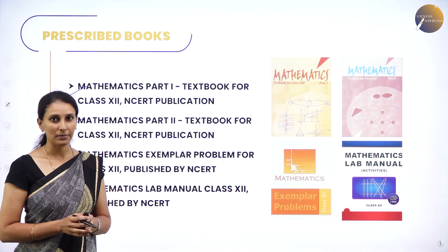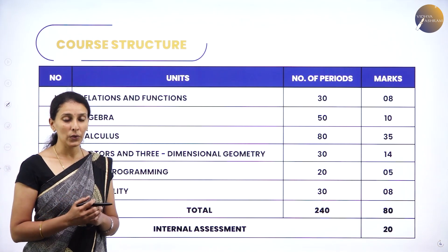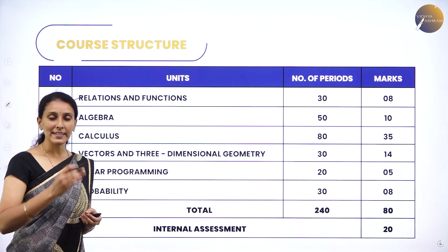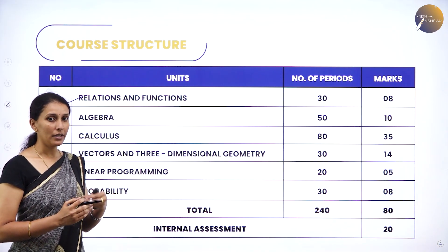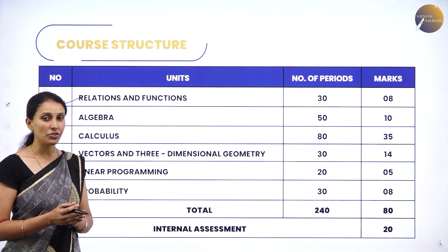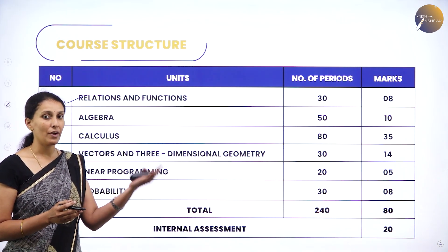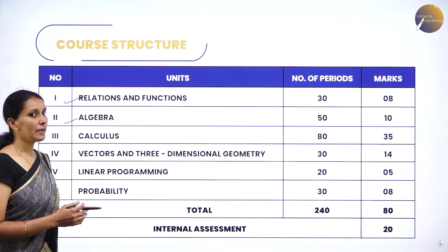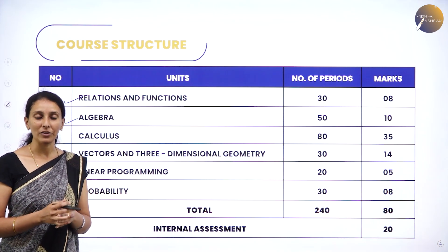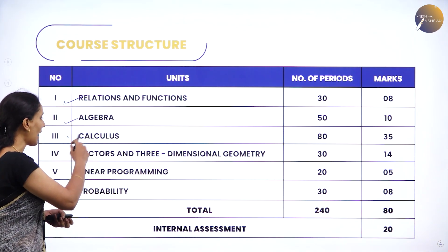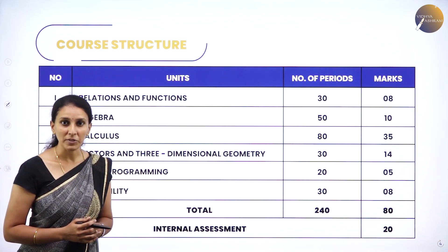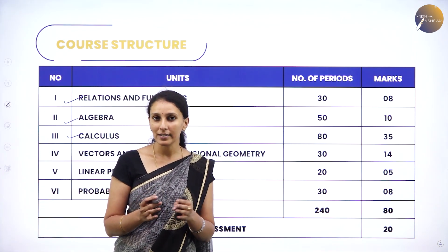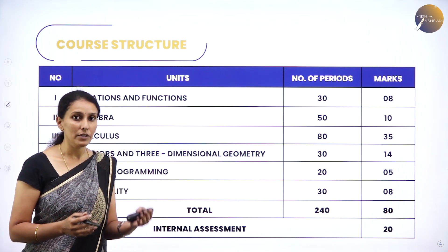The course structure has six units. The first unit is Relations and Functions — you have already studied relations and functions in Class 11, and here you will study types of relations, types of functions, as well as inverse trigonometric functions. Next is Algebra, which includes matrices and determinants — very easy to score. Then we have Calculus, a continuation of limits from Class 11, covering continuity of a function and differentiability of various types of functions like log, exponential, and inverse trigonometric functions.